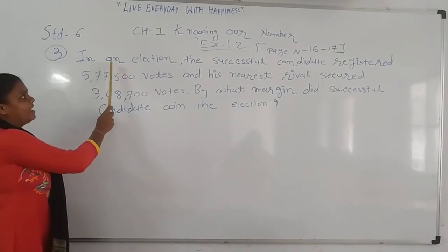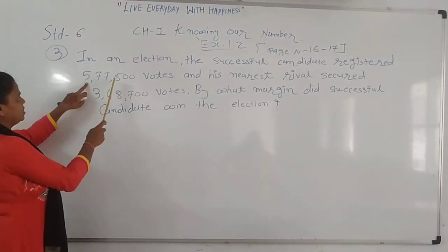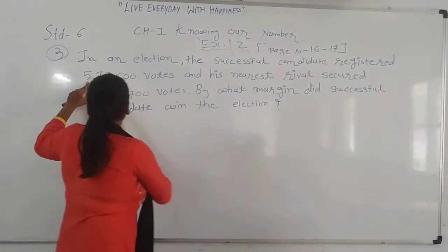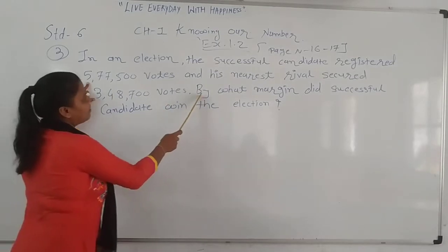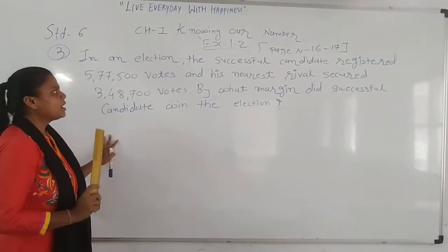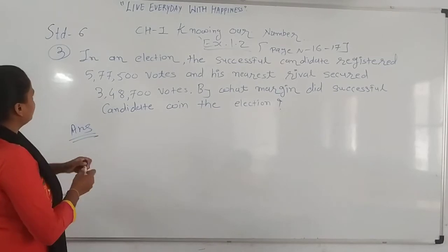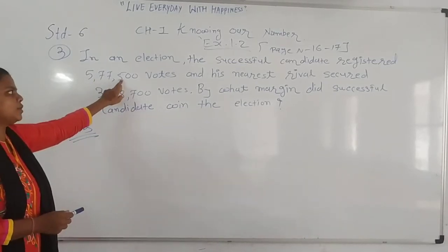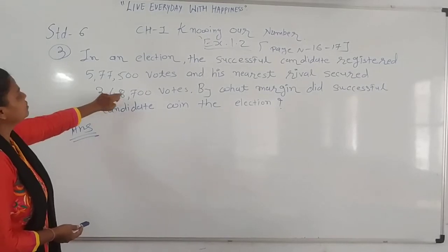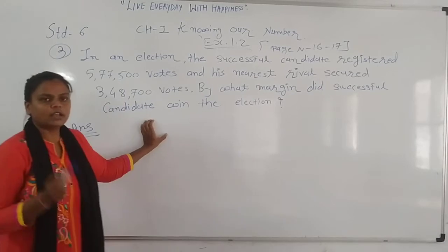In an election, the successful candidate registered 5,77,500 votes and his nearest rival secured 3,48,700 votes. By what margin did the successful candidate win? So the operation will be subtraction — we need to find the difference.